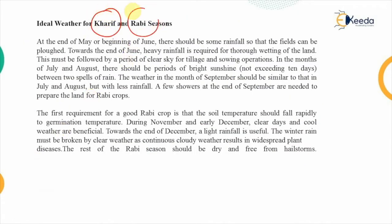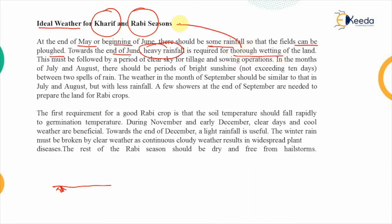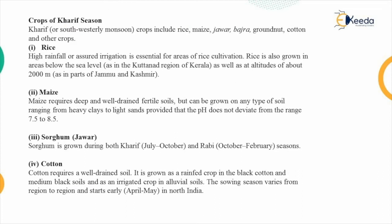Regarding ideal weather for the Kharif and Rabi seasons: at the end of May or beginning of June there should be some rainfall to prepare the land for ploughing. Towards the end of June, heavy rainfall must occur for thorough wetting of the land, which is required for growing Kharif crops, followed by a period of clear sky for tillage and sowing. When the rainfall is over, a spell of a few showers at the end of September helps prepare the Rabi crops.